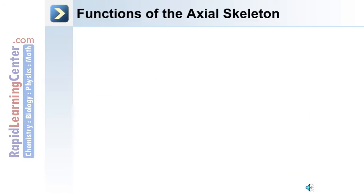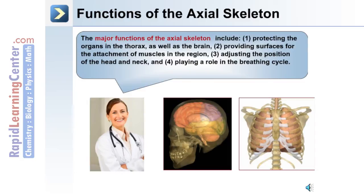Let's review the major functions of the axial skeleton. 1. Protecting the organs in the thorax as well as the brain. 2. Providing surfaces for the attachment of muscles in the region. 3. Adjusting the position of the head and neck. 4. Playing a role in the breathing cycle.